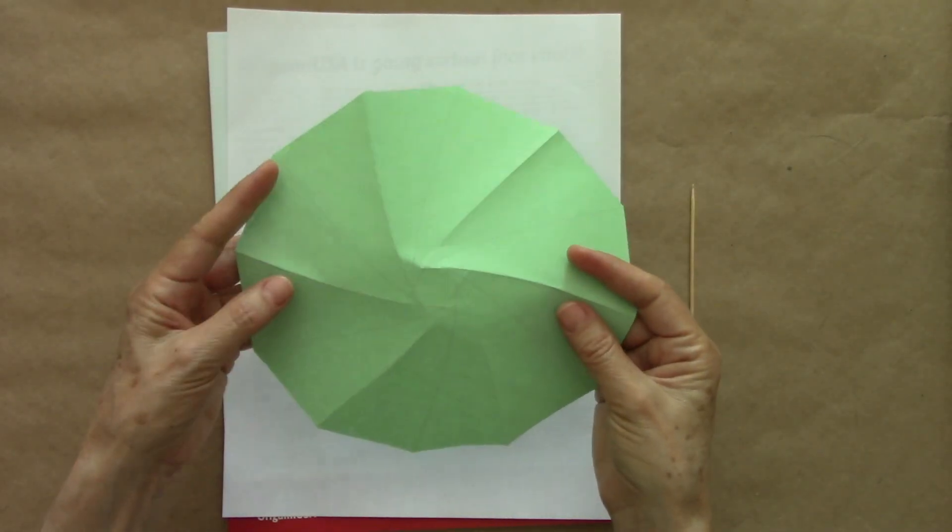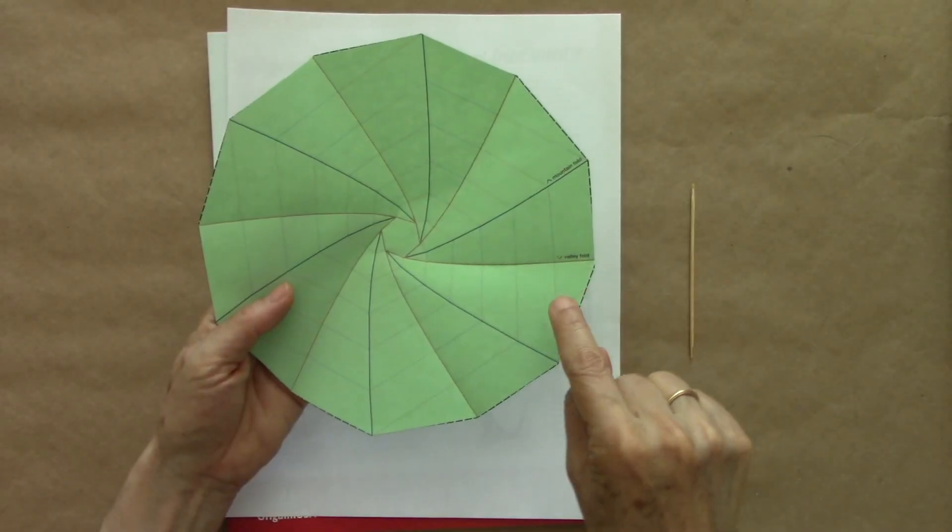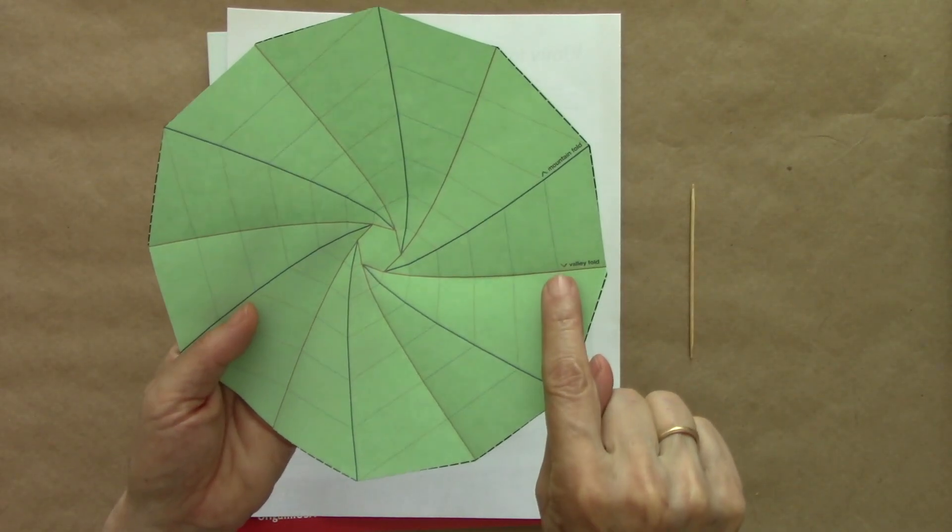So on this side, they are mountains, but on this side, which is what we have here, they are valleys.